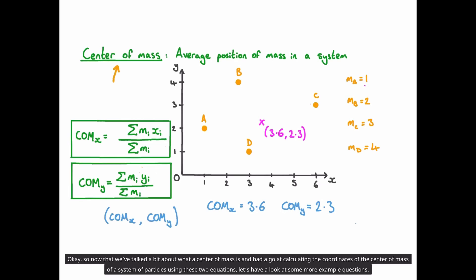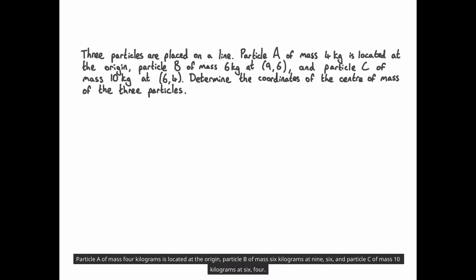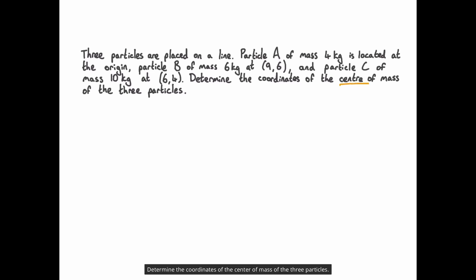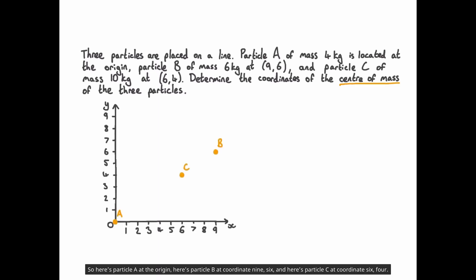Now that we've talked about what a centre of mass is and how to calculate the coordinates of the centre of mass of a system of particles using these two equations, let's have a look at some more example questions. Three particles are placed on a line: particle A of mass 4 kg is located at the origin, particle B of mass 6 kg at coordinates 9, 6, and particle C of mass 10 kg at coordinates 6, 4. Determine the coordinates of the centre of mass of the three particles. A good place to start is to draw the positions of the three particles on a pair of coordinate axes.